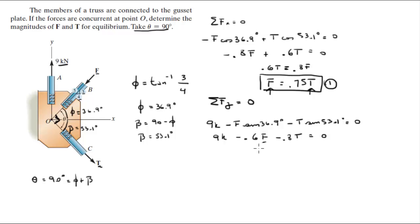So if I solve for F, I get that F is equal to 15 minus 1.333 T. This is my second equation. I know that F is 0.75 T and F is also equal to 15 minus 1.333 T.